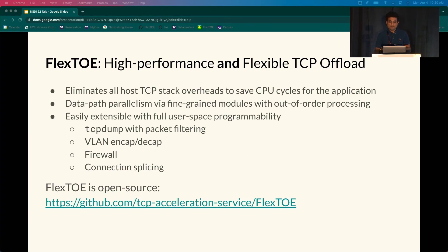In conclusion, Flexto is a flexible yet high-performance TCP offload engine for SmartNICs. It eliminates all host TCP stack overheads to save a significant amount of CPU cycles for the application. Flexto leverages fine-grained parallelization of the TCP data path and out-of-order processing to achieve high performance on WMP SmartNIC architectures. Using a modular design, Flexto is easily extensible, as demonstrated by implementing a number of common data center features. Flexto is open source and available on GitHub.